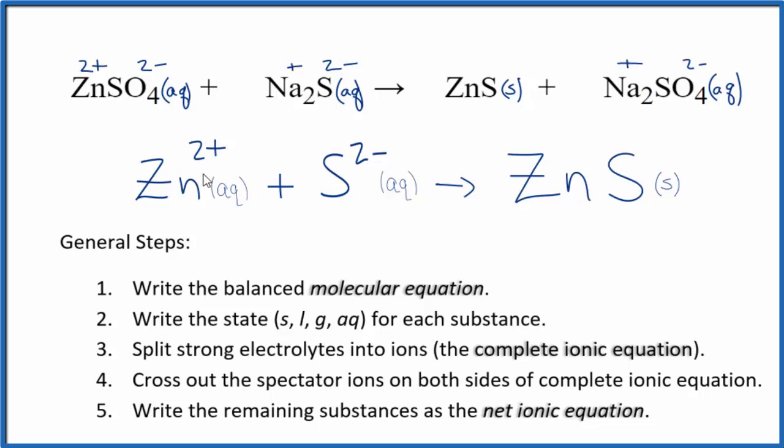If you notice the charge, we have 2 plus, 2 minus. That adds up to zero. Net charge is zero here. For the products, this is a neutral compound. Net charge is zero. So charge is balanced, and if you count the atoms up, they're balanced as well.